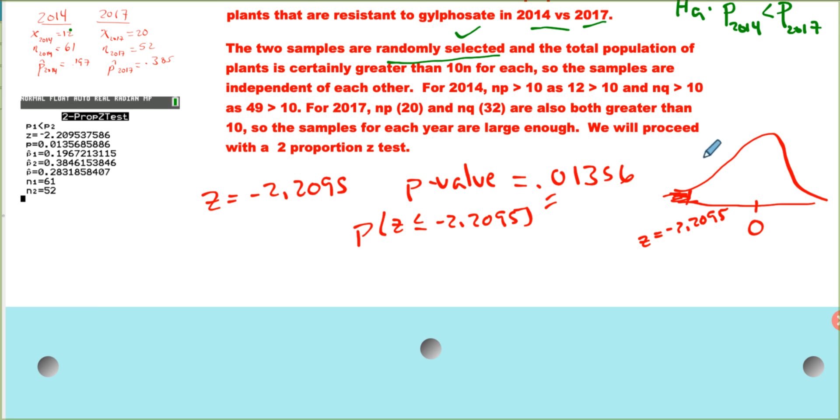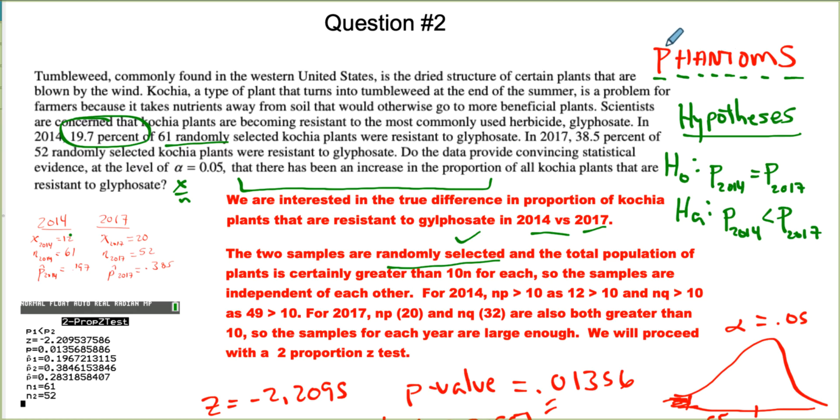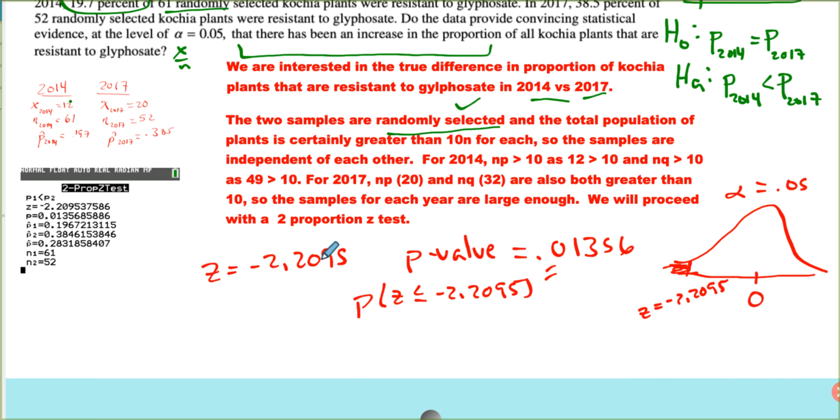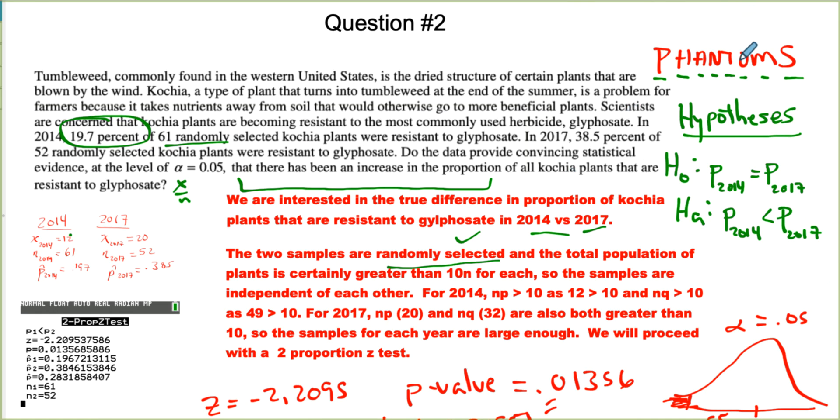Now, alpha, let's write that down. So alpha was 0.05. That's generally what we're going to use. Did they tell us what alpha was? Yes, they did. So 0.05 is alpha. So going back to PHANTOMS, we have satisfied everything up through T. T was the test statistic, and that's that Z score right there, but also the p-value. That's the O. So now we need to make a decision.